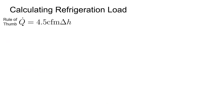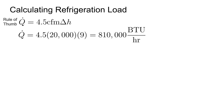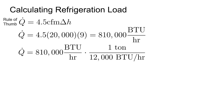To calculate the refrigeration load, we can use the rule of thumb Q equals 4.5 times CFM times delta H. Plugging in 20,000 CFM for the volume and our delta H of 9, we get 810,000 BTU per hour, which we can divide by 12,000 BTU per hour per ton to get the answer in tons. We get 67.5 tons, and that is the answer.